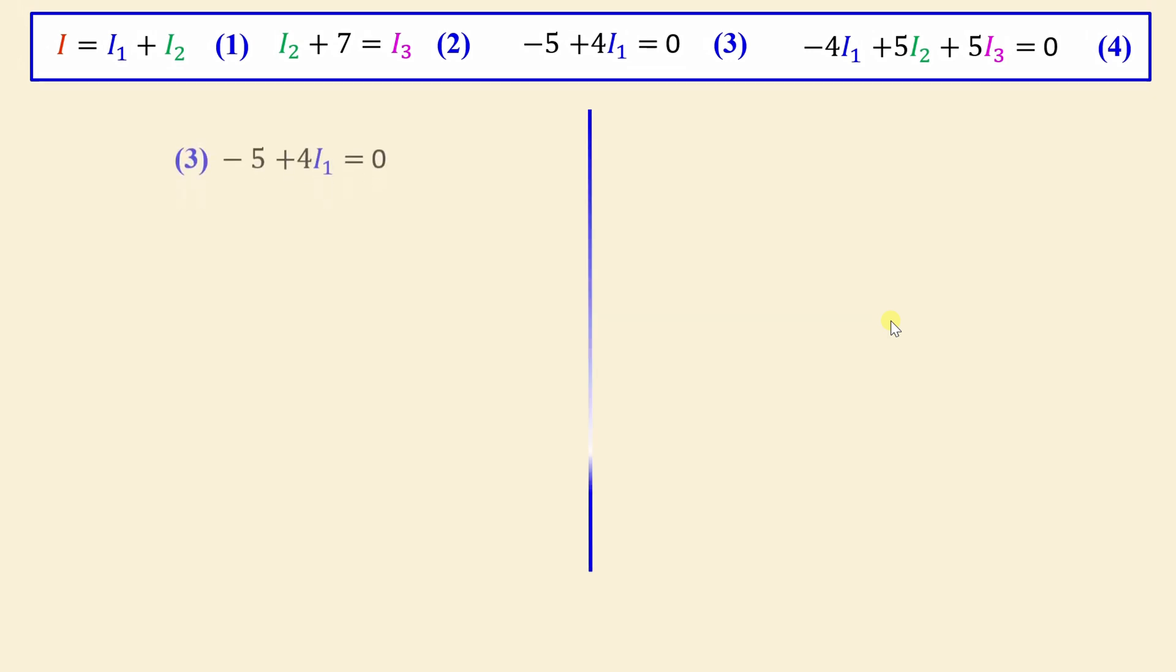Let's start with equation number 3. We have negative 5 plus 4 I1 is equal to 0. We can find directly I1 is 5 over 4 is equal to 1.25 amps.